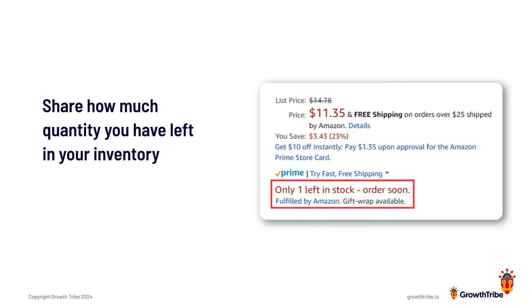You can also use the Amazon and Booking.com trick of showing how many items are left — for example, 'three left' or 'four left, buy before we go out of stock.' This also increases the sense of urgency and pushes people toward converting.